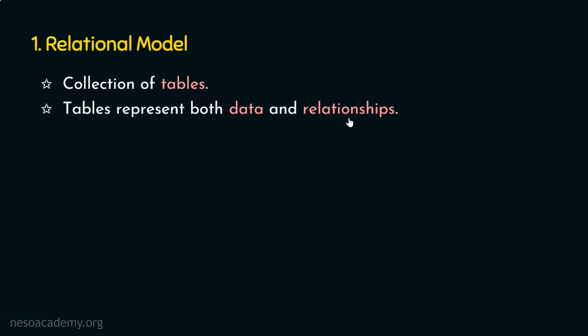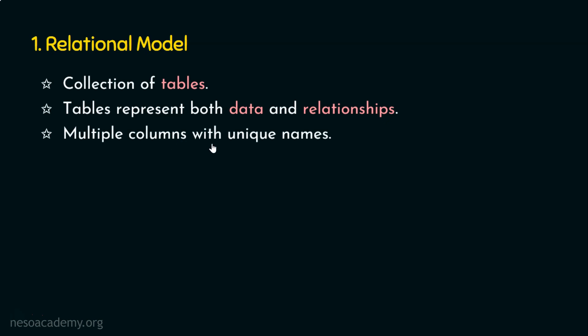In the relational model, everything is represented in the form of tables. A table is going to contain multiple columns, and each column in the table will have a unique name. In a database, we may have multiple tables and each table will have a unique name. Why is it named the relational model? Because in RDBMS — the relational database management system — we refer to tables as relations.